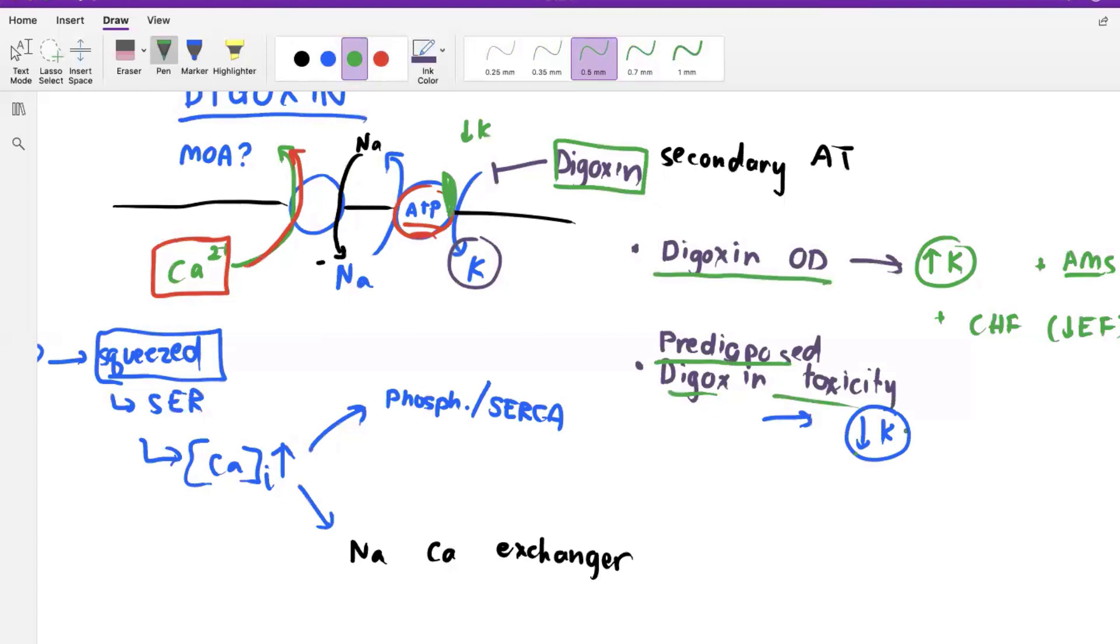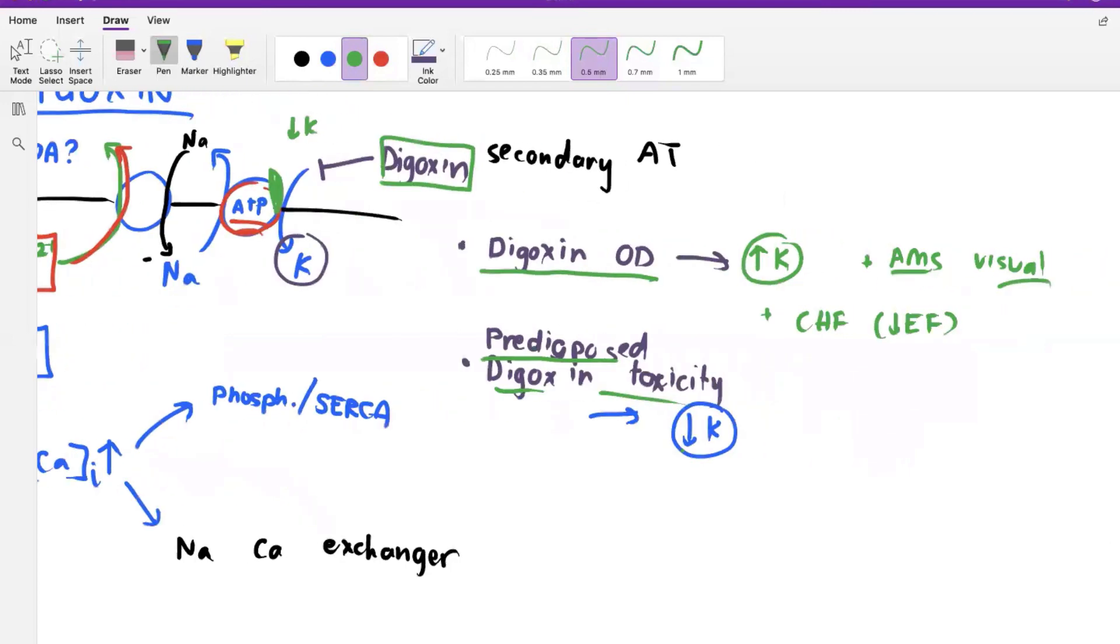And so that's really important because I know you're thinking that this is a dumb little detail, but it will really help you understand the mechanisms behind the two presentations, i.e. what will predispose somebody for digoxin toxicity, which is one answer choice, and what will the overdose in itself cause.